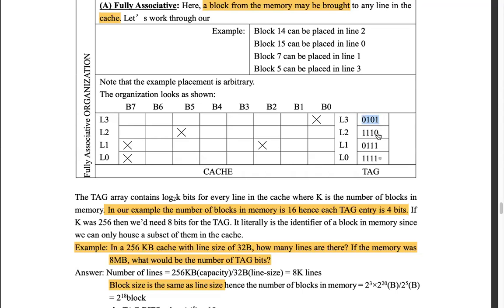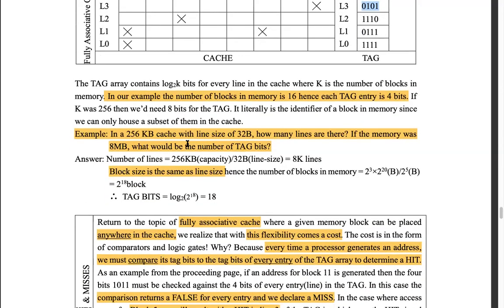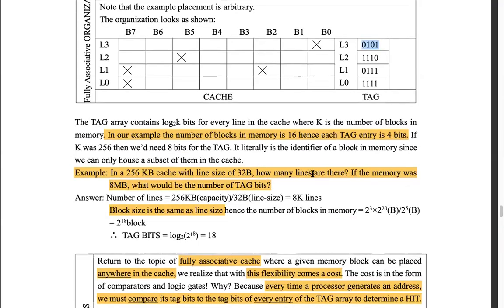Let's see this question: in a 256 KB cache with line size of 32 B, how many lines are there? Total cache size is 256 KB and line size is 32 bytes — storing 32 bytes in every line. Divide the two: 256 KB / 32 B = 2¹⁸ / 2⁵ = 2¹³ = 8K. So you have 8K cache lines.